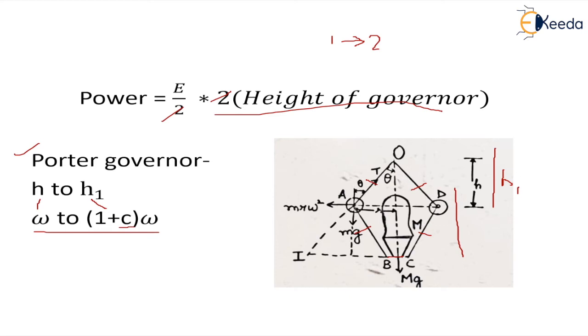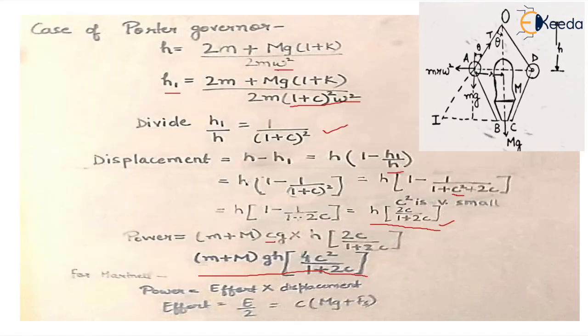So it becomes 1 plus 0.06, or if it decreases, it will be 1 minus 0.06 into omega. So now in case of a porter governor, we know the height of the governor, we know the formula. It is 2m + Mg(1+k), where m is mass of the balls, M is mass of the sleeve, and g is gravity. So k is, if this angle is assumed to be beta,